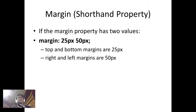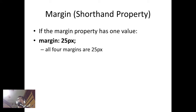If there are only two values — for example, margin: 25px 50px — the first number is the value for both the top and bottom margins, and the second value is for both the right and left margins. If the margin property has only one value — for example, margin: 25px — then all four margins (top, right, bottom, and left) will have that same value.